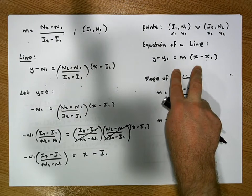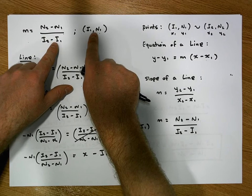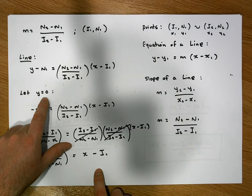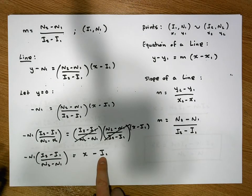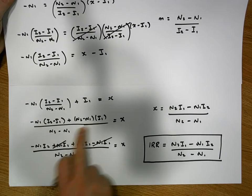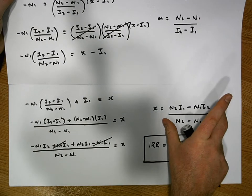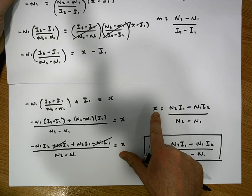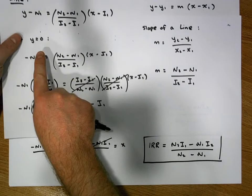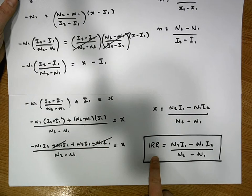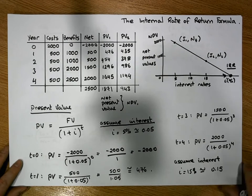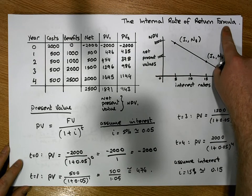We derived the formula by finding the slope of the line, choosing a point, substituting into the line equation, then setting y equal to zero — since that signifies a net present value of zero. Through algebraic manipulation, we solved for x, which represents the internal rate of return. The result is the quotient IRR = (n2·i1 − n1·i2)/(n2 − n1).